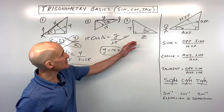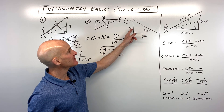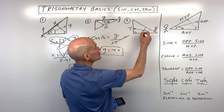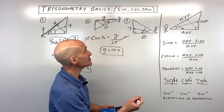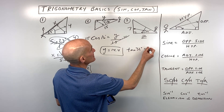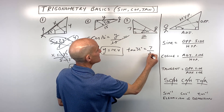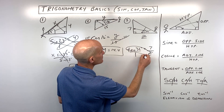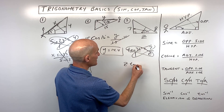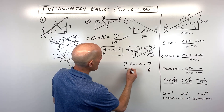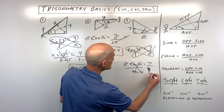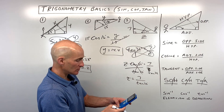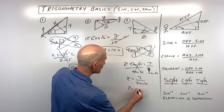For the last side-finding example, positioning ourselves at the angle, we've got opposite and adjacent sides — that's TOA, or tangent. So the tangent of 32 degrees equals the opposite side seven divided by the adjacent side z. Using the cross product property, z times the tangent of 32 equals seven, then divide both sides by the tangent of 32. So z equals seven divided by the tangent of 32 degrees, which comes out to about 11.2.